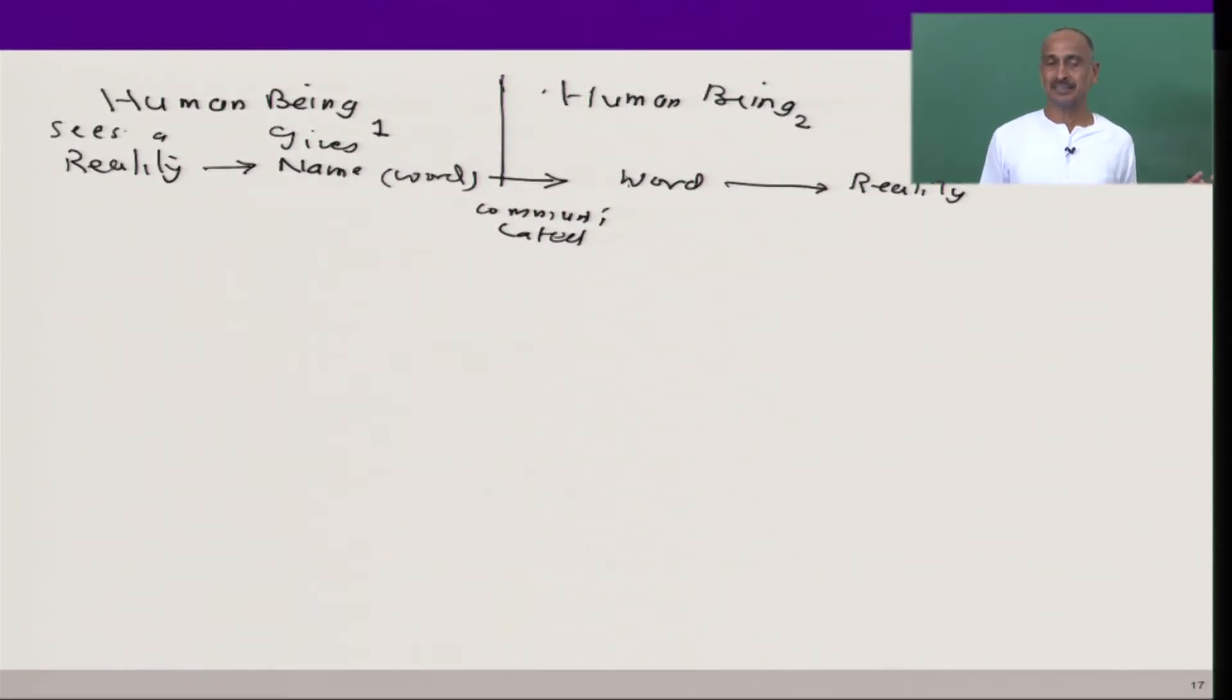When it is the same reality, the communication has taken place. When it is a different reality, then there is a miscommunication. So in the normal mode, if reality 2 is same as reality 1, communication has taken place, communication has been successful. If R2 is not equal to R1, communication failed.